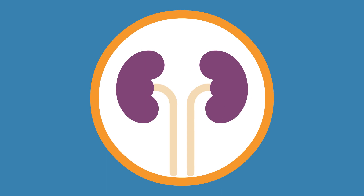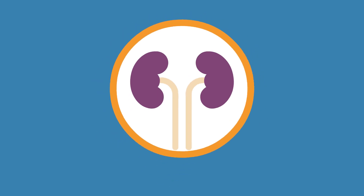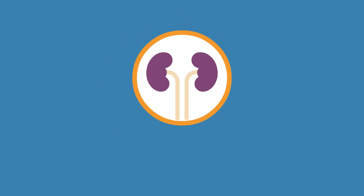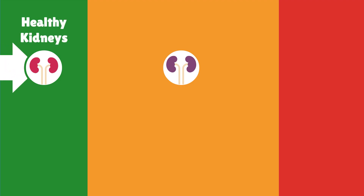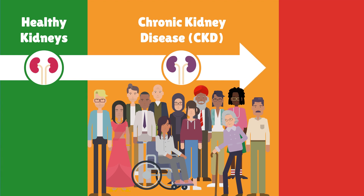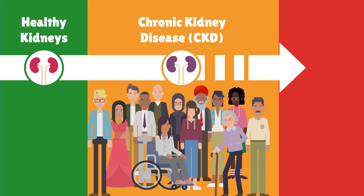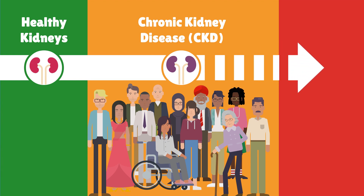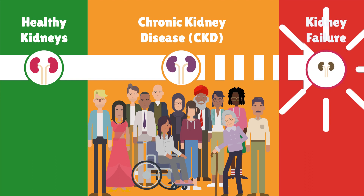Chronic kidney disease, or CKD, is a long-term condition where the kidneys don't work as well as they should. It's common and often happens as people get older. It can get worse over time, and eventually the kidneys may stop working altogether. This is called kidney failure.